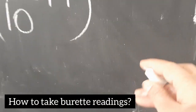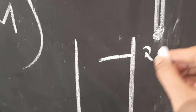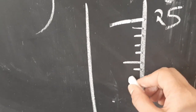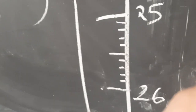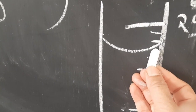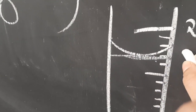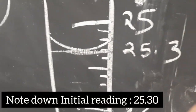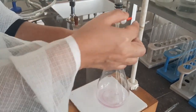Let me explain how to take a burette reading. Say this is 25 and the divisions go 25.1, 25.2 up to 26. If the lower meniscus is touching the line at 25.3, you read it as 25.3. Now I will open the nozzle and let the liquid pass drop by drop into the titration flask.